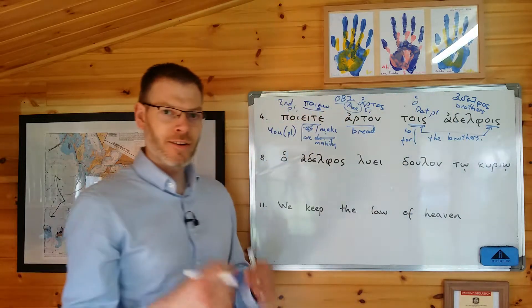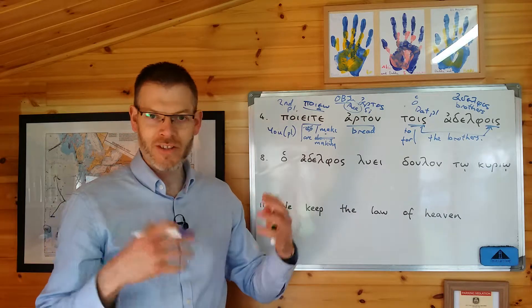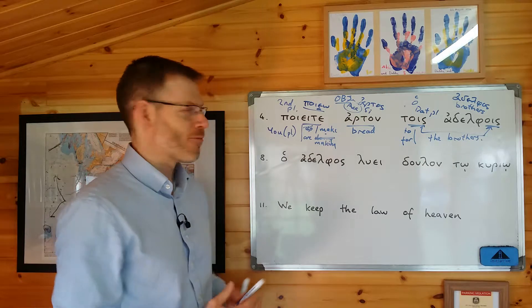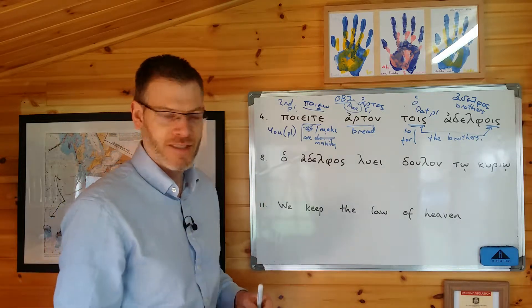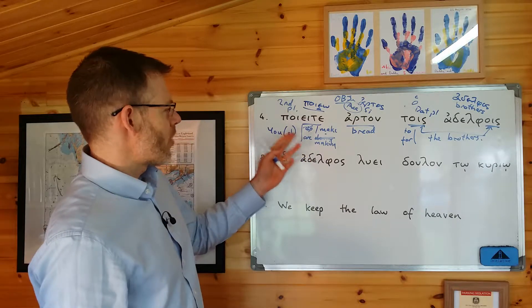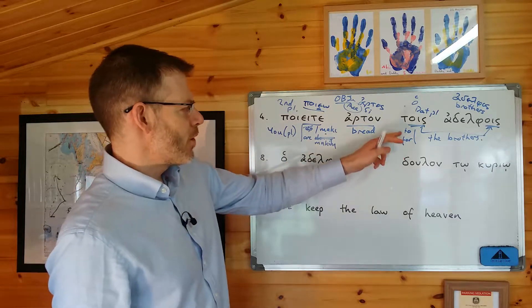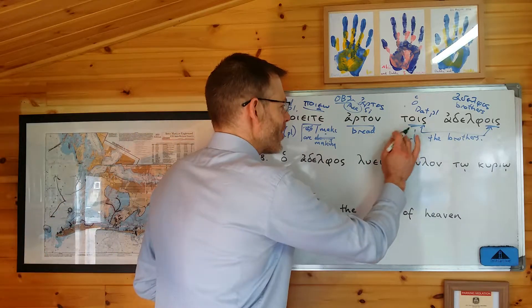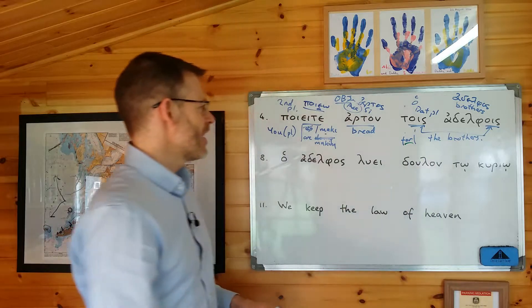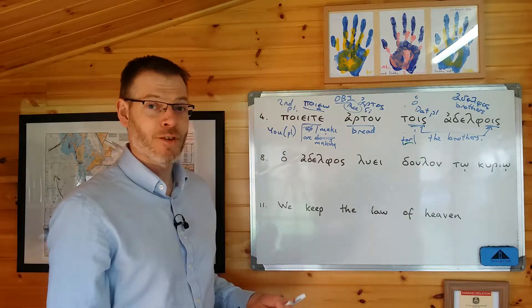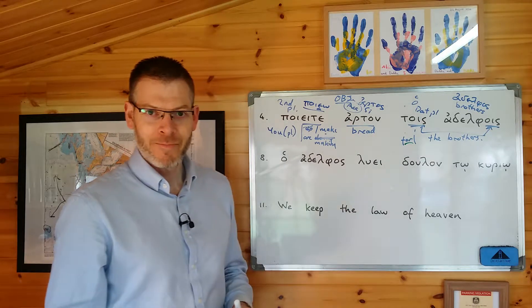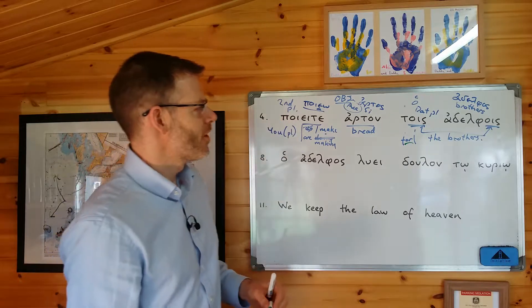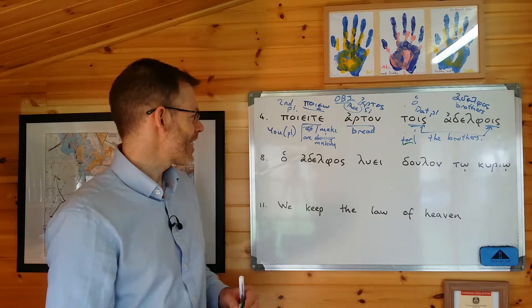Now, having got those sketched out, we've got all the various options that the different parts of this sentence could contribute to the overall meaning. We now look at it and think: which makes most sense? You make or are making bread to the brothers or for the brothers? Well, quite plainly it's going to be 'for the brothers.' So you would translate this: 'you are making' or perhaps 'you make bread for the brothers.' Poieite arton tois adelfois. Okay, that's number four.